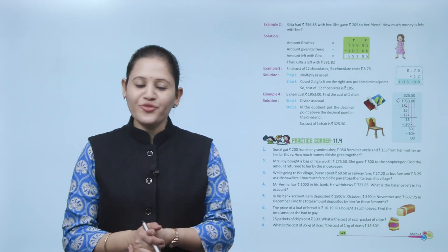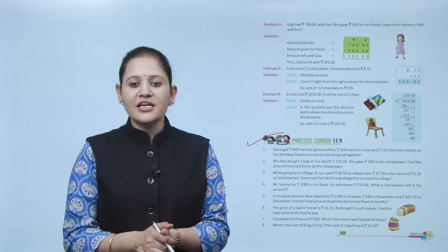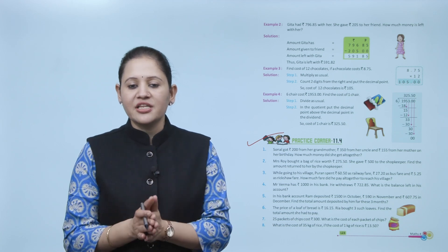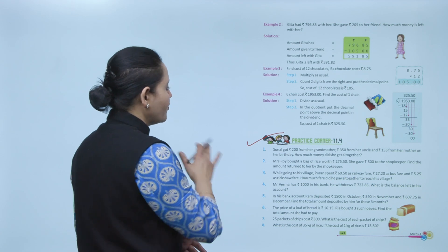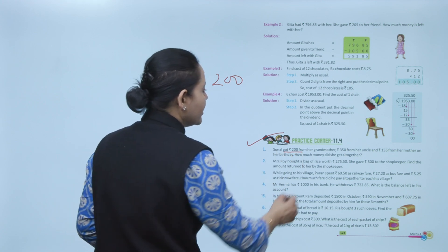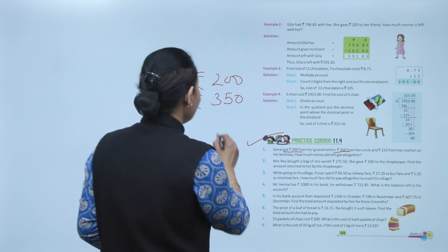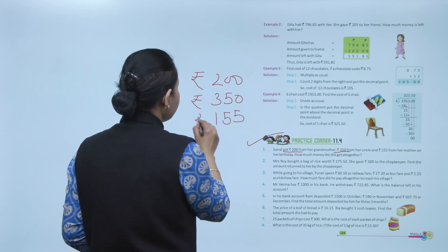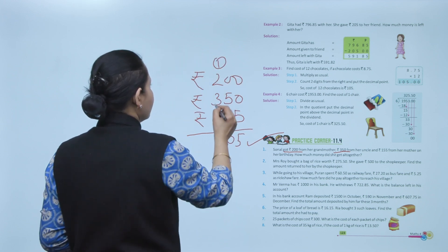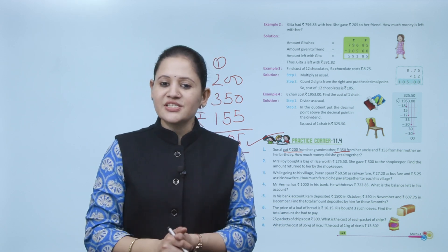Next is practice corner 11.4. Sonal got rupees 200 from her grandmother, rupees 350 from her uncle, and rupees 155 from her mother on her birthday. How much money did she get altogether? Adding 200 plus 350 plus 155, the total money she got is rupees 705. Practice all the questions of this exercise.